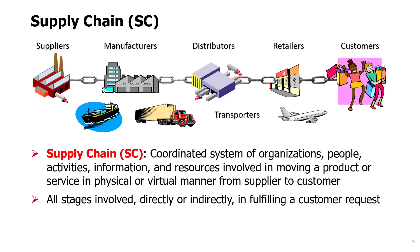A supply chain is a coordinated system of organizations, people, activities, information, and resources, all involved in moving a product or service — in a physical or virtual manner — from supplier to customer. So it is all stages that are directly or indirectly involved in fulfilling a customer request.